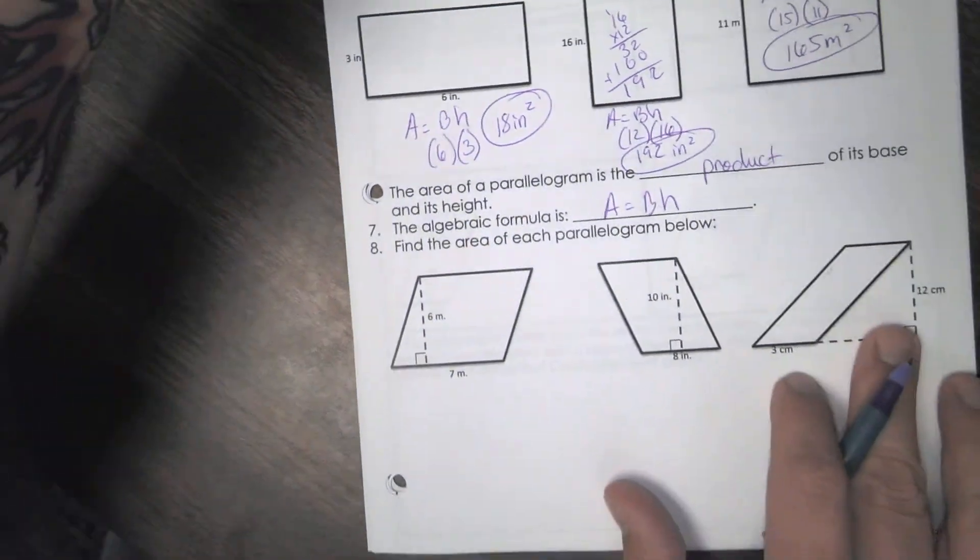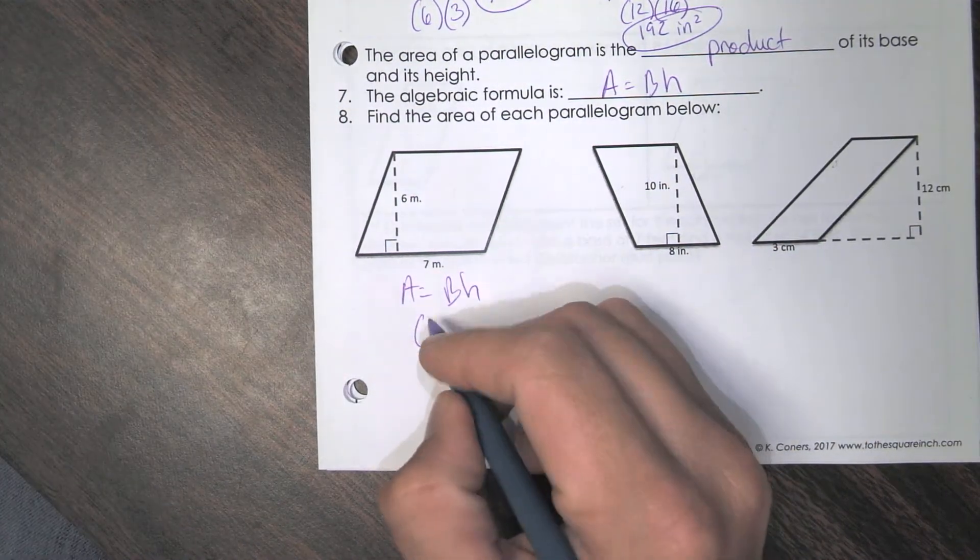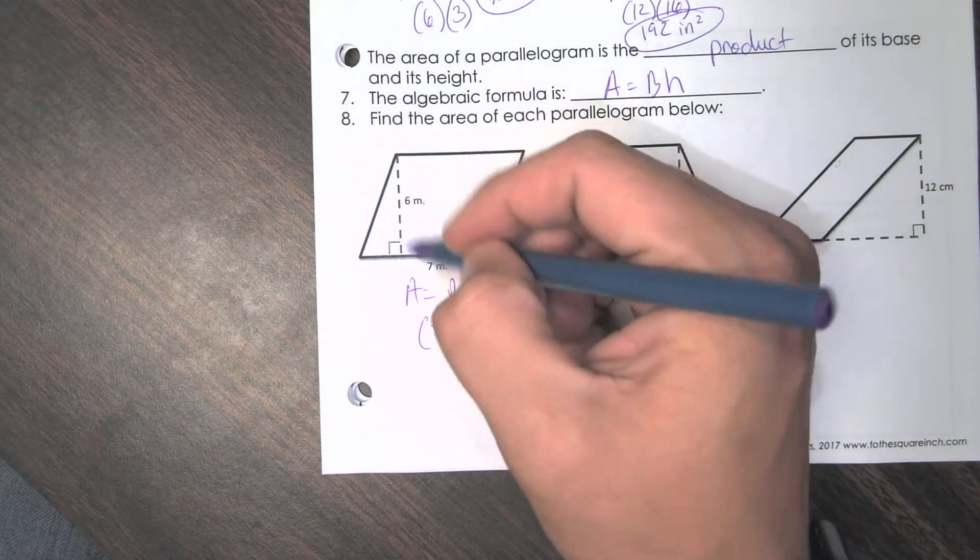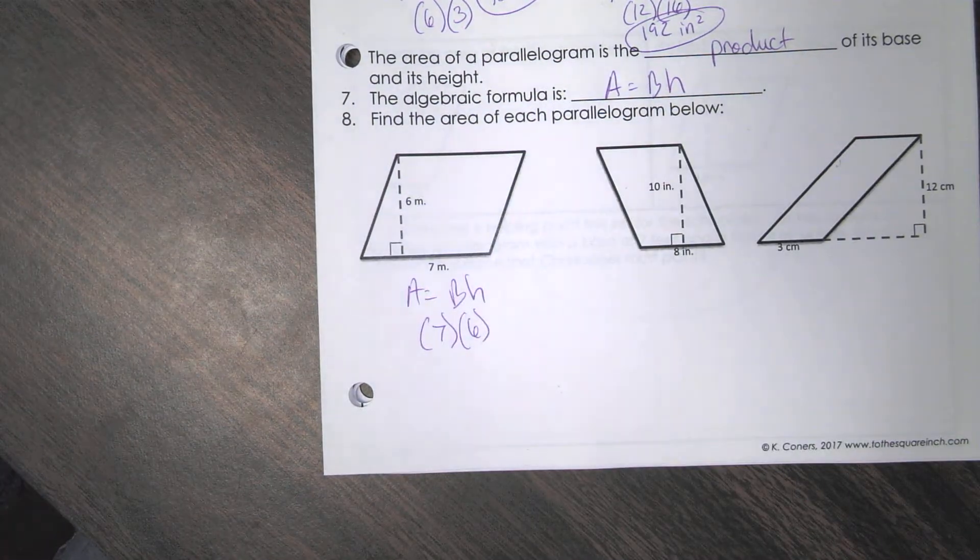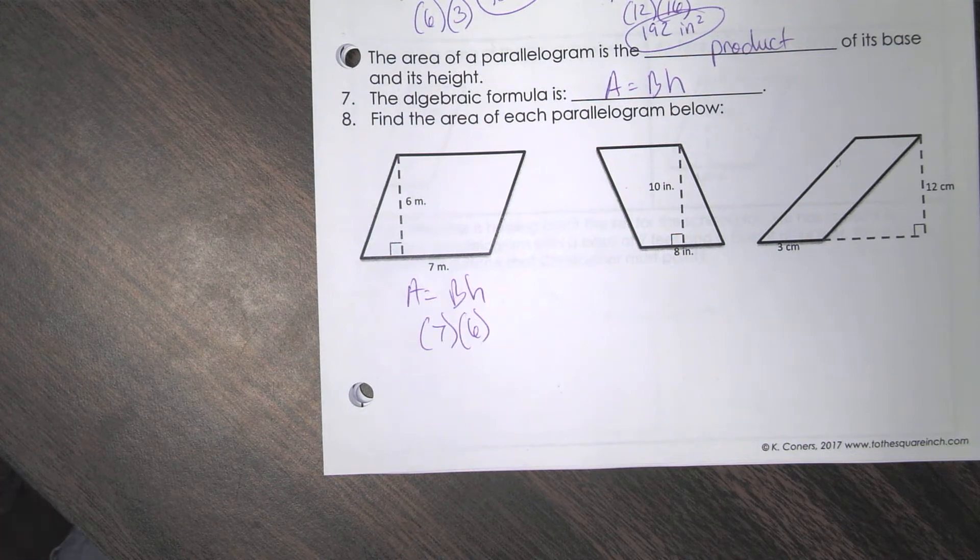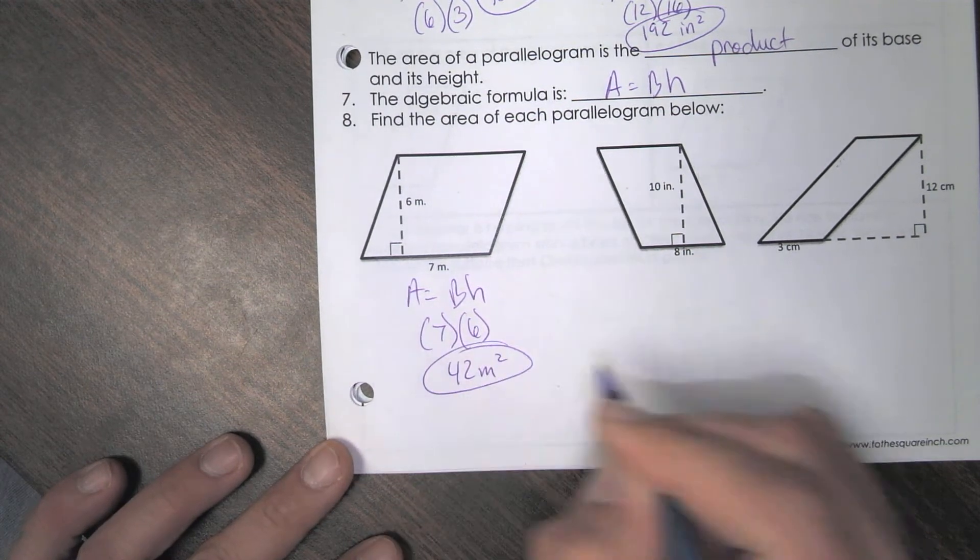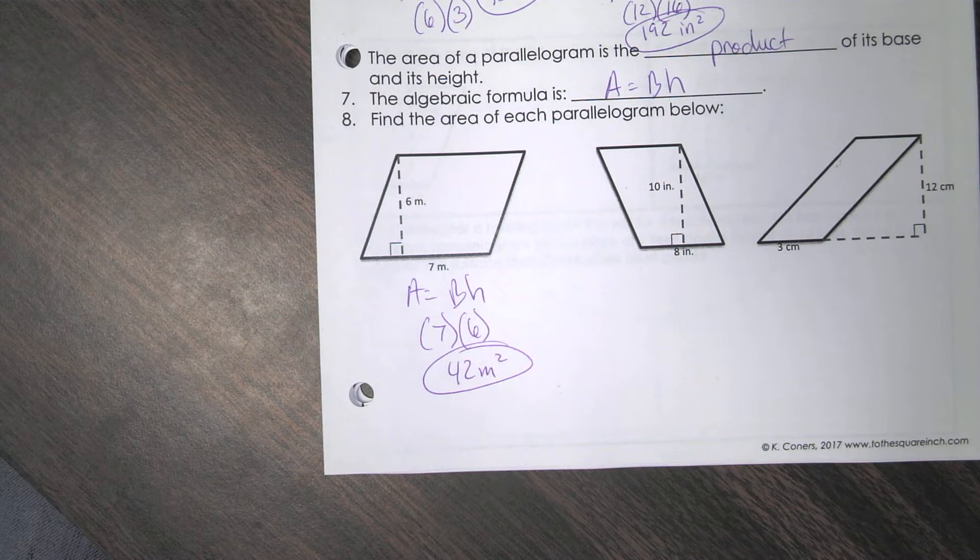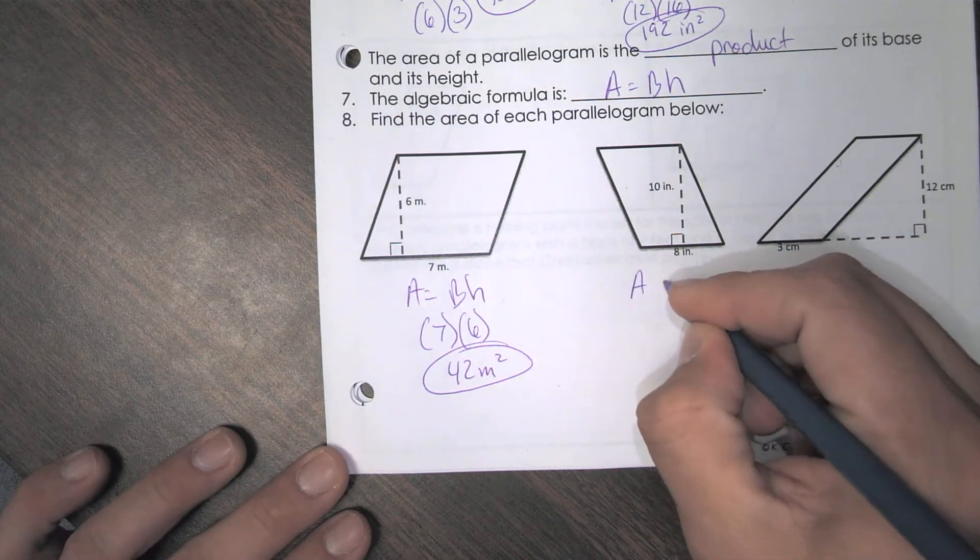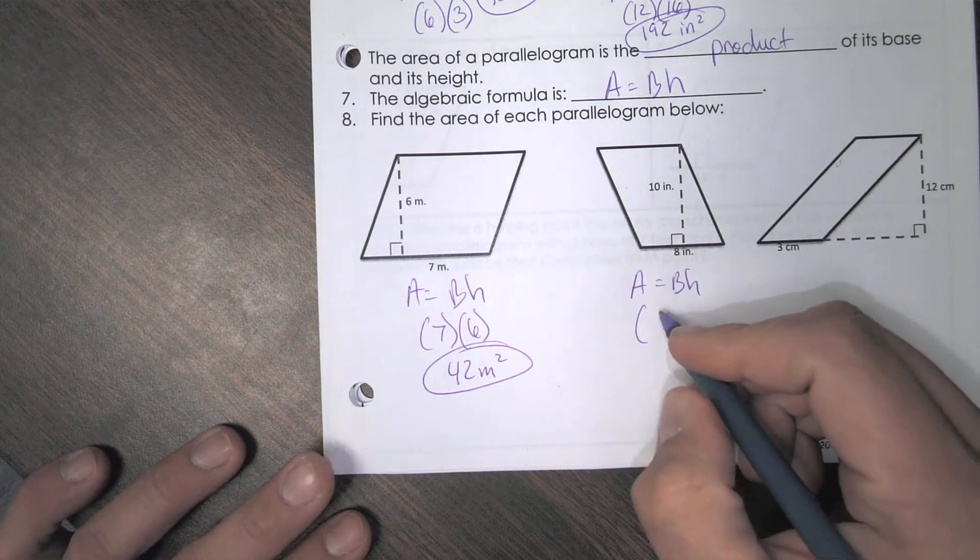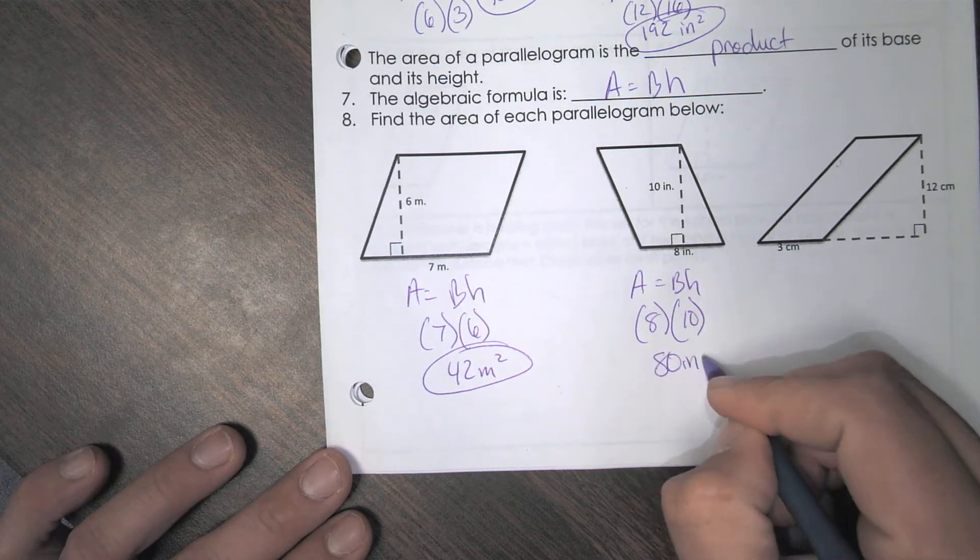So it says find the area of each parallelogram below. So once again, it's just area equals base times height. So the base here is what? Seven. The height is six. The height will always be that dotted line with the right angle box at the bottom. That shows you height of the parallelogram. So then seven times six is 42 meters squared.